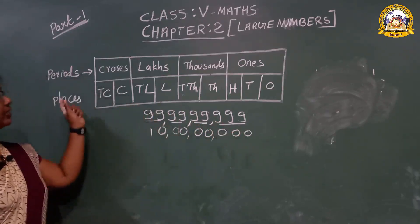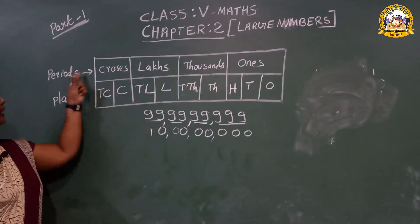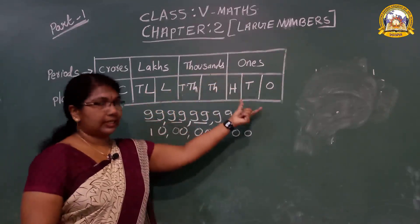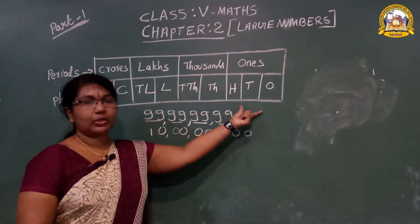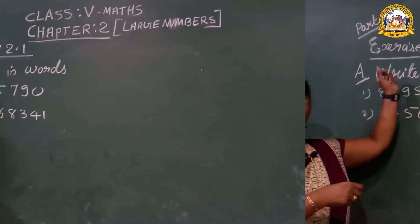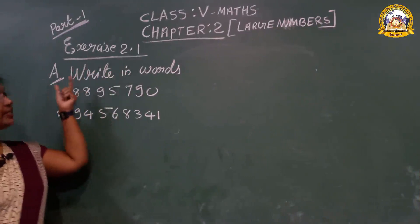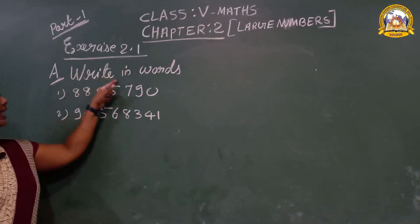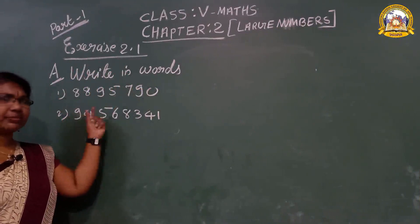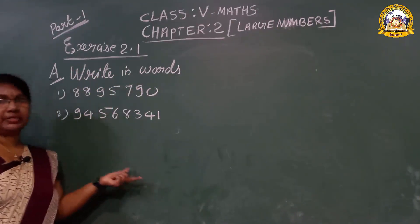All students, in the classwork you have to draw these columns — periods and places. First period has three columns. Now let us start the next exercise: Exercise 2.1. See the first question — write in words. Write in words means what is another name? Write in number names.